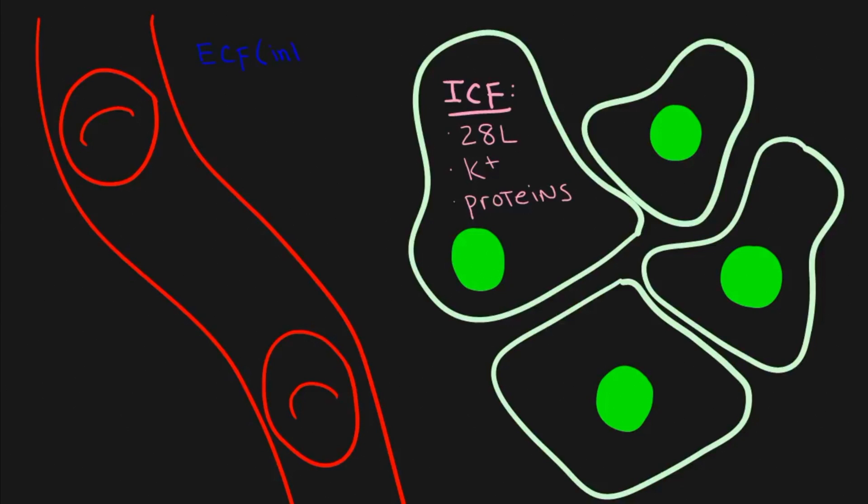This fluid is known as the interstitial fluid. Interstitial literally means between or interstitial, which is your tissue space. This ECF, the interstitial ECF, is made of about 10.5 liters worth of fluid and tends to be high in things like sodium and chloride ions.